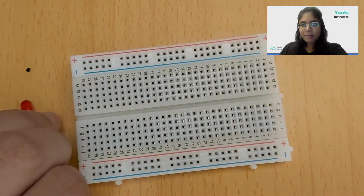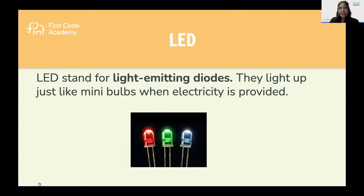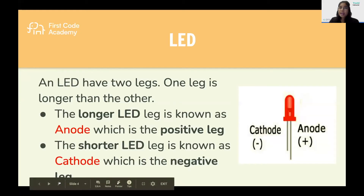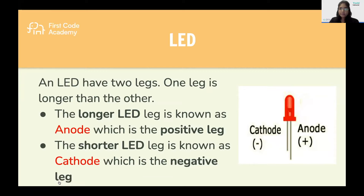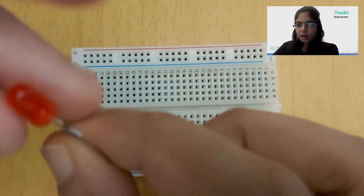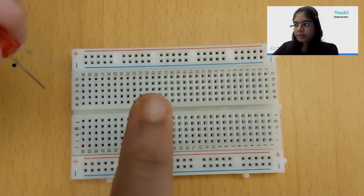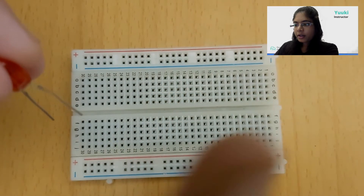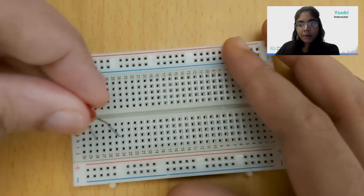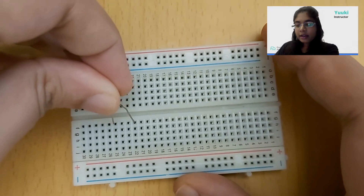Next I'm going to set up my LEDs. LED stands for light emitting diode — they light up just like mini bulbs when electricity is powered. An LED has two legs; one leg is longer than the other. The longer leg is known as the anode, which is our positive leg. The shorter leg is known as the cathode, which is the negative leg. I'm going to spread the legs a little bit further apart and place the longer leg on my right-hand side and the shorter leg on my left-hand side.